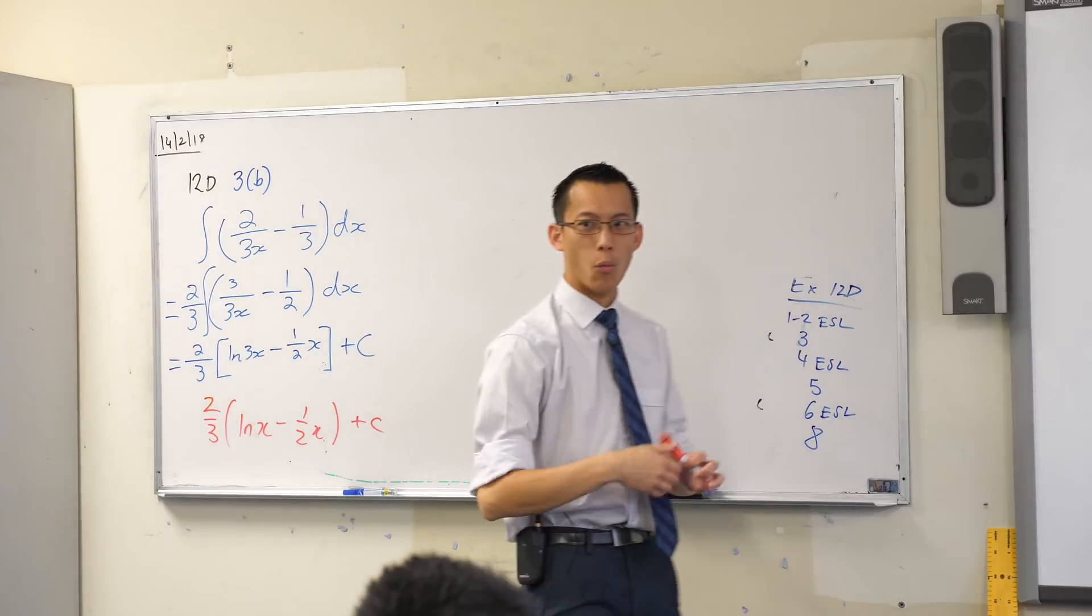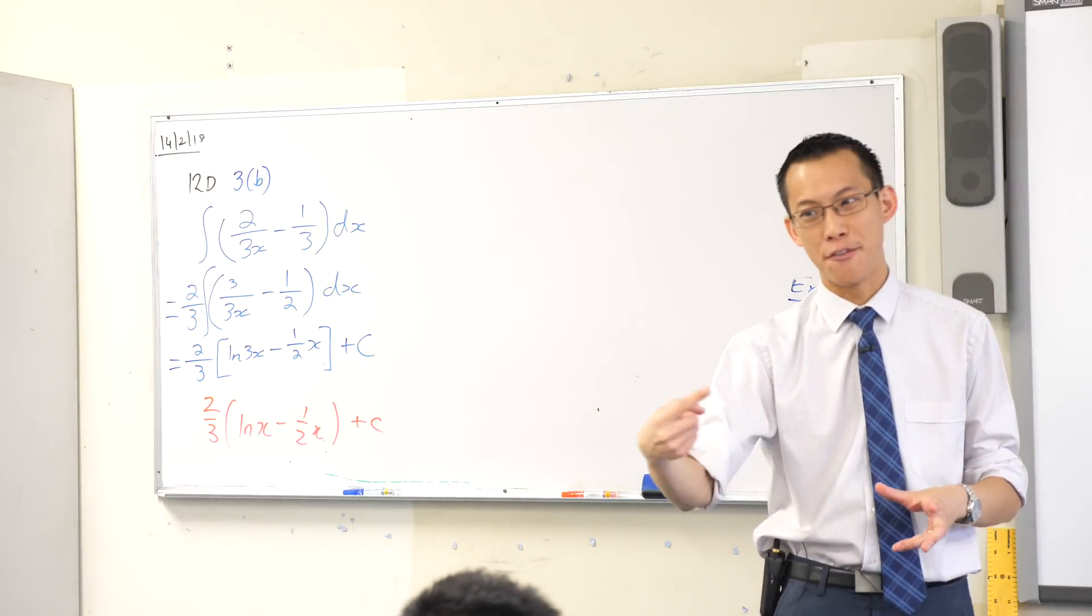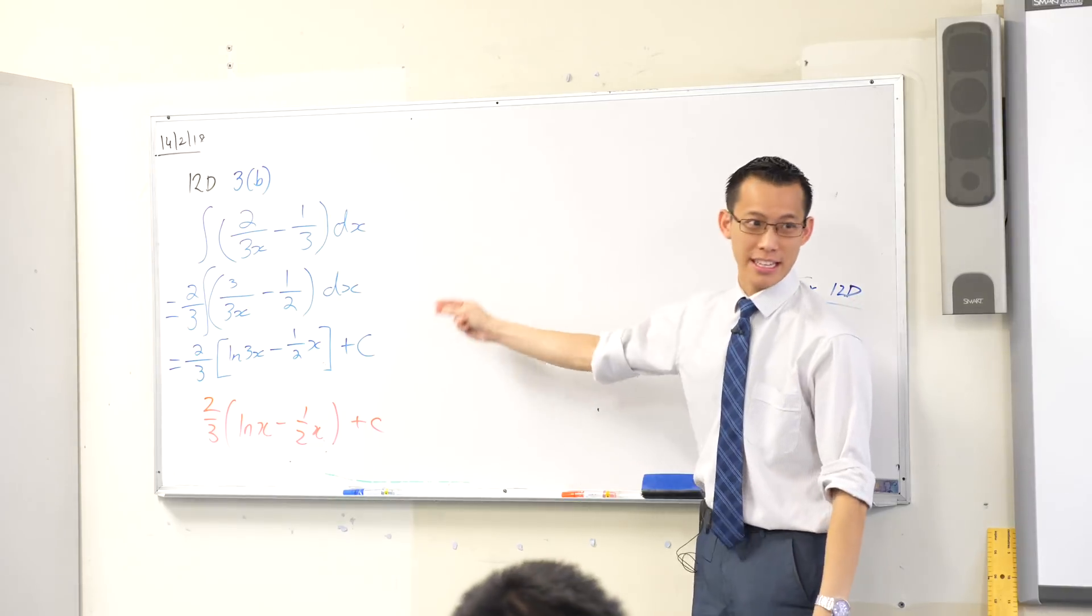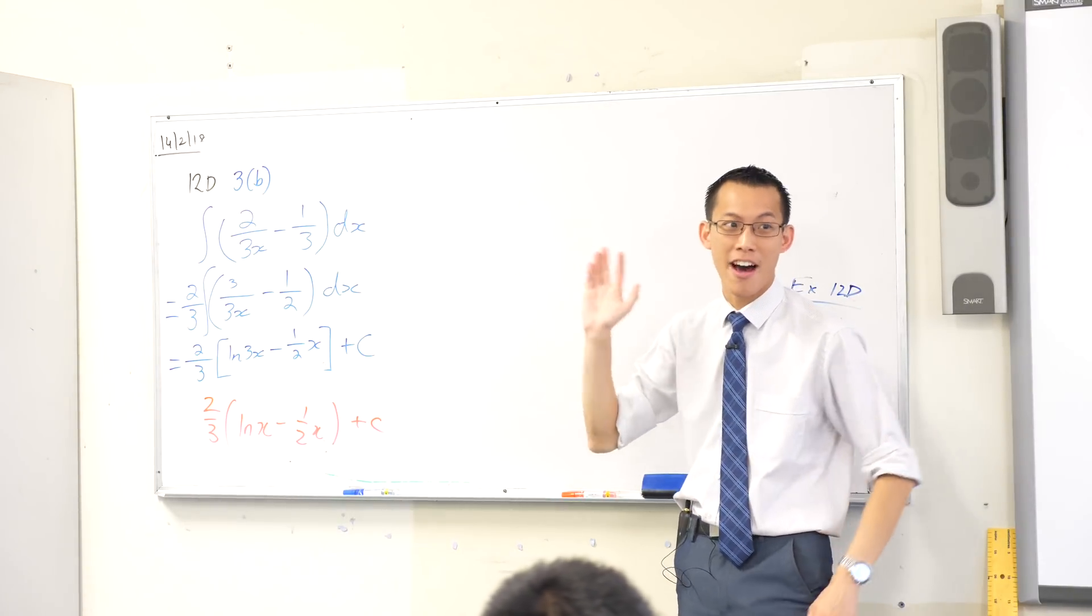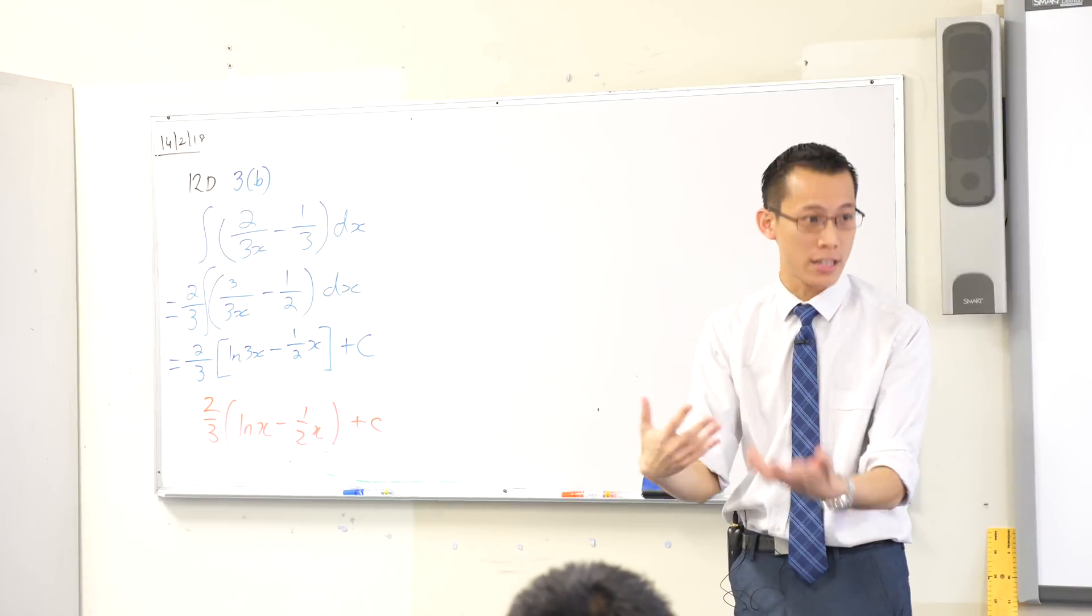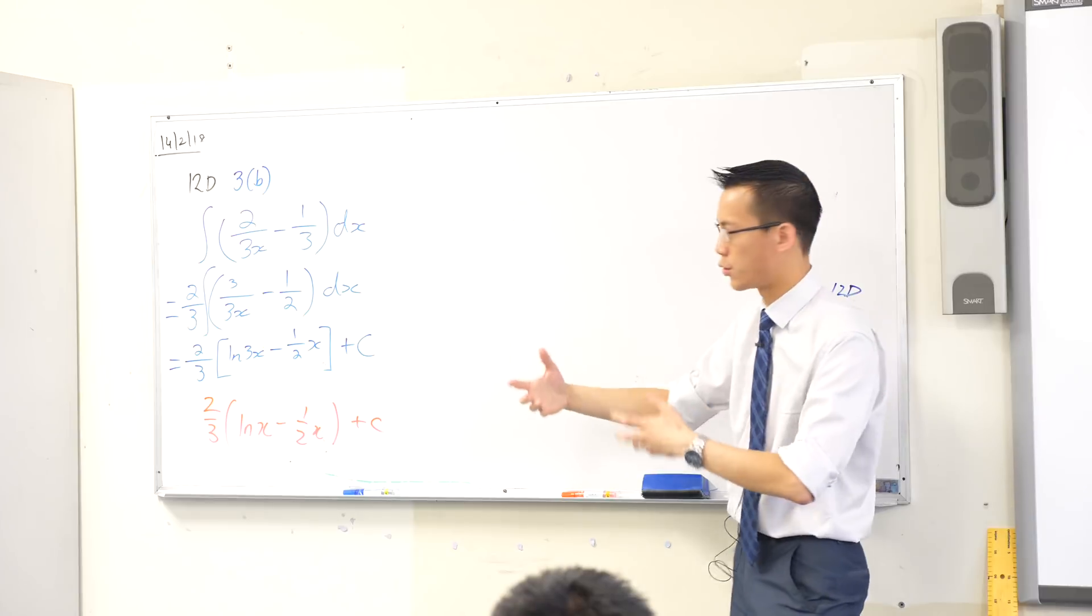Working out what has gone wrong is a more important skill, believe it or not, than getting it right first time. Real mathematicians aren't people who just get things effortlessly correct. Actually real mathematicians spend 90% of the time beating their head against the wall because they're like, it doesn't make sense, what have I done wrong? That's the clue that they know they're on the right track because something is difficult.